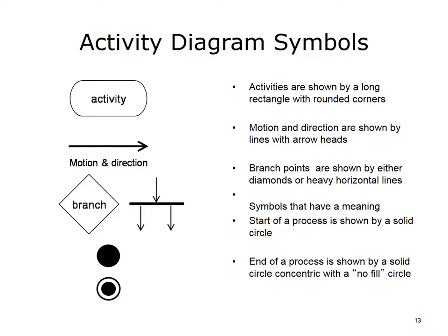An activity, shown by a long rectangle with rounded corners, is a task that is performed either by a person or a computer system. Motion and direction, shown by lines with arrowheads, indicate the flow of the process or information. Branch points in a process, shown by either a diamond or a heavy horizontal line, indicate when more than one option or path exists. The start and stop of a process or information flow are shown by circles.